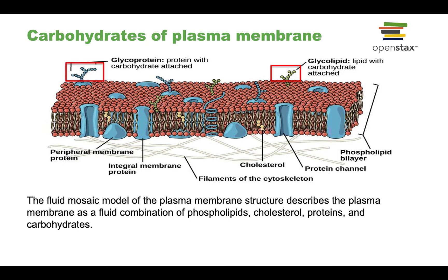Speaking of carbohydrates, they attach to two different parts of the plasma membrane — either to the protein parts or to the phospholipid parts. When the carbohydrate is attached to the protein, it is called a glycoprotein. When it is attached to a lipid, it is called a glycolipid. Similar to glycoproteins, glycolipids are involved in cell-to-cell interaction, receiving signals, and responding to signals that are coming from outside of the cell.